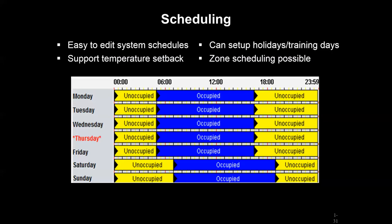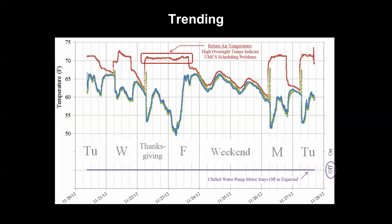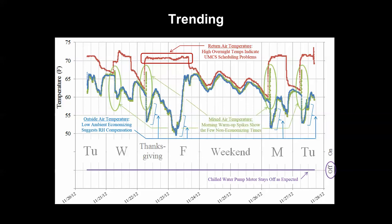There are a number of things we can do with a UMCS front end system. First is scheduling — having a graphically easy way to build schedules and add them to specific systems or devices. We also have performance trending, where we can build time series charts and add variables from our control system. For example, we looked at how a chiller motor operates relative to economizer temperatures, and saw scheduling problems overnight and on holidays — outside air temperatures where we were economizing and bringing in 100% outside air when we shouldn't, causing unnecessary heating. You can tell a lot from performance trending, and supplement where you don't have data points with portable data loggers.